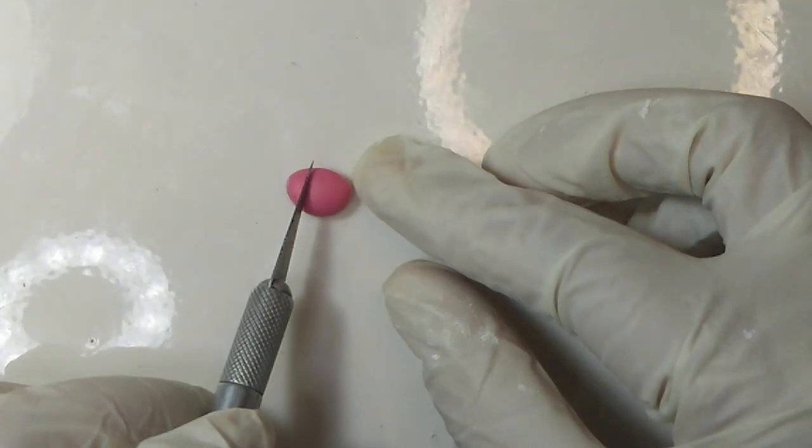You might want to keep in mind that real ladybugs are about 8 to 10 millimeters in size. Cut off the tip of the oval shape. This is where the head will go.